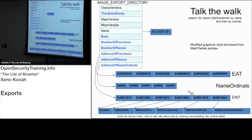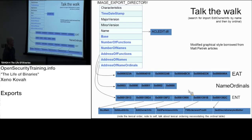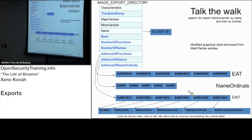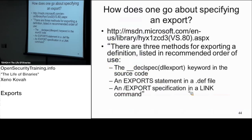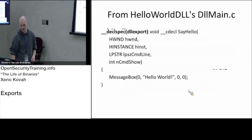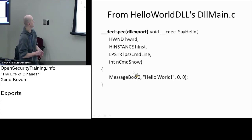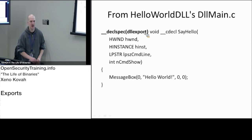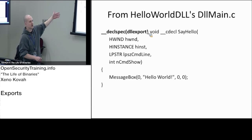Moving on. Number of functions is the size of the export address table array, and number of names is the size of the export names table array — and these need not be the same size. As a miscellaneous note: if you're writing code, how do you actually export a function? How do you make the compiler generate all that data structure for you? The simplest way — and the way used in the DLL templates — is to put __declspec(dllexport) at the beginning of the function, and the compiler does the right thing and creates an export names entry pointing to the function's name string, like 'hello.'